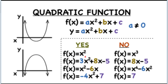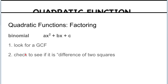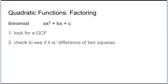Those are some examples of what are quadratics and what are not quadratics. Now let's talk about factoring. If I'm going to factor a binomial, the first thing is to look for the greatest common factor, and then check to see if it's a difference of two squares, because if it's factorable it's probably going to fall into one of these two categories.